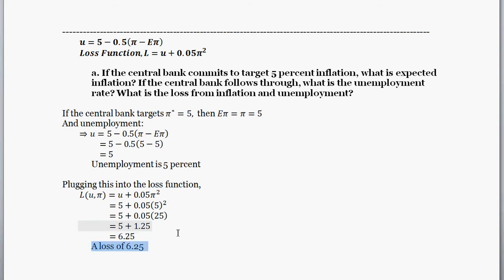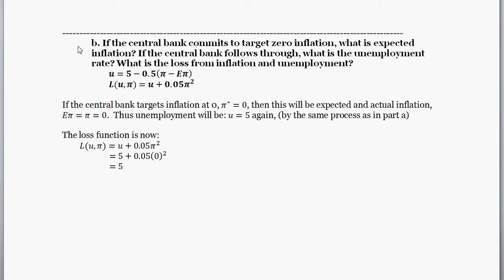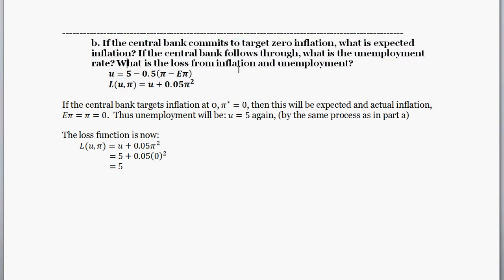In Part B, we're going to see a different inflation target and calculate the loss in that situation. Part B asks: if the central bank commits to a target of zero inflation, what is expected inflation? If the central bank follows through, what is the unemployment rate, and what is the loss from inflation and unemployment?